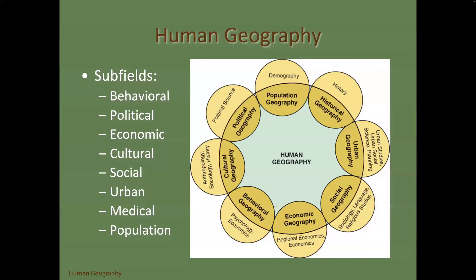Human geography has subfields: behavioral, political, economical, and so on. Think of it as inside the wheel being human geography, and on the outside the non-geographical side. For example, political geography has political science alongside it; population geography has demography. Demography simply looks at numbers, while population geography looks at the numbers of people and how they vary in space.